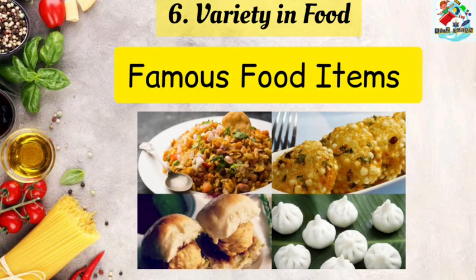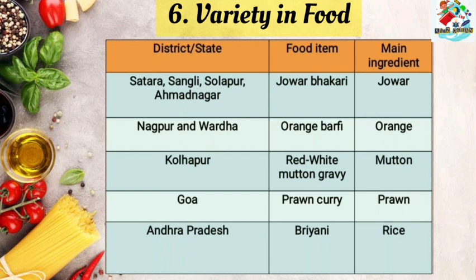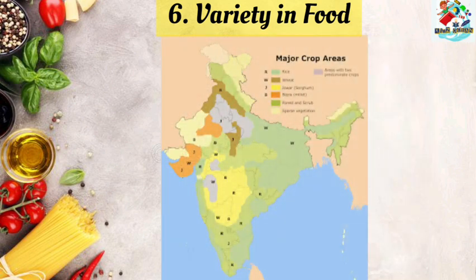Now let us know the famous food items in Maharashtra and its neighboring states. In Nagpur and Vardha, the food item is orange barfi and the main ingredient is orange. In Kolhapur, the food item is red and white mutton gravy and the main ingredient is mutton. In Goa, the food item is prawn curry and the main ingredient is prawns. In Andhra Pradesh, the food item is biryani and the main ingredient is rice.